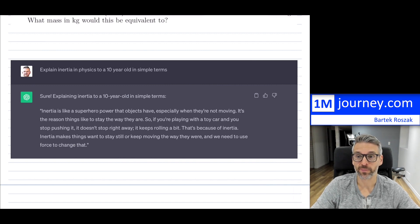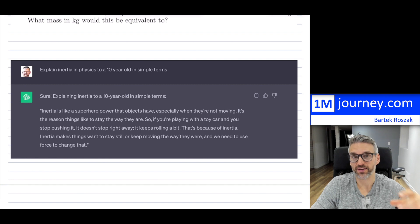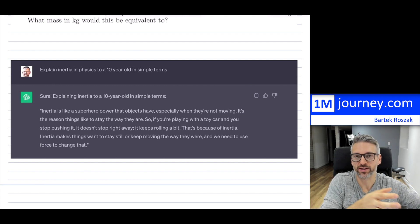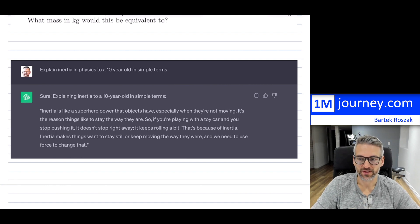When I asked this of ChatGPT, it has done probably a better job than me. It says that inertia is like a superhero power, which is pretty cool for a 10-year-old. It's that property or superhero power that objects have, especially when they're not moving. If you're playing with a toy car and you stop pushing it, it doesn't stop right away—it keeps rolling a bit, and that's because inertia just wants to continue on its way.